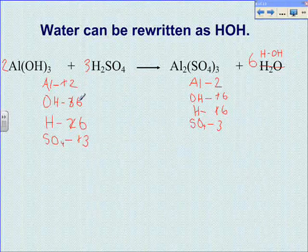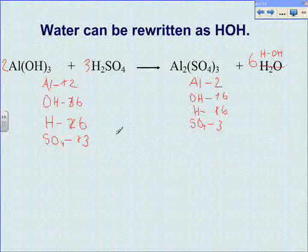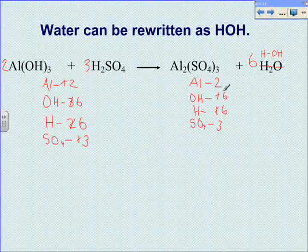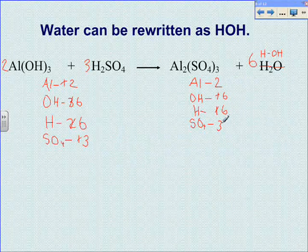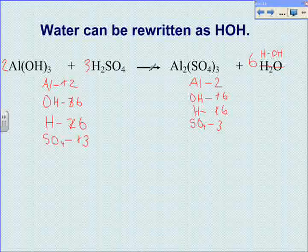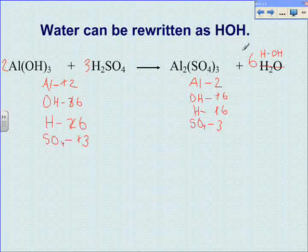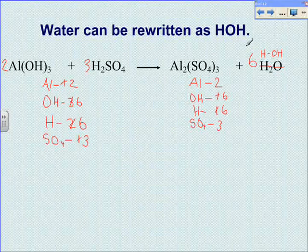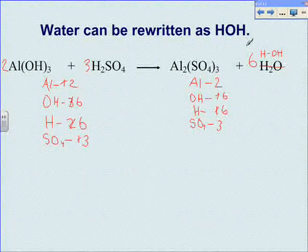Now we have six hydrogens on both sides and we have three sulfates. Our numbers match up: 2, 6, 6, 3 on both sides. This equation is balanced.